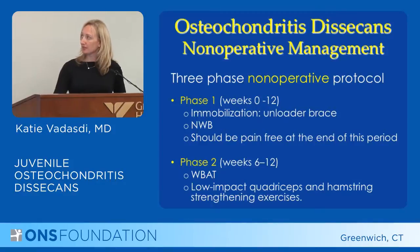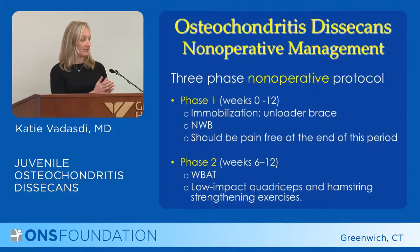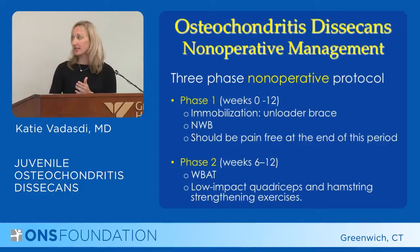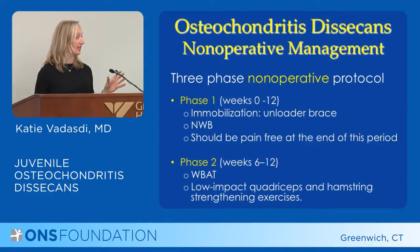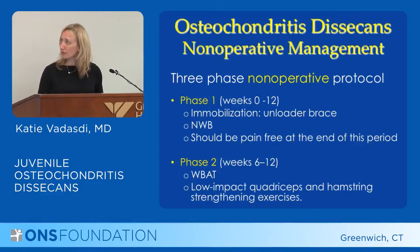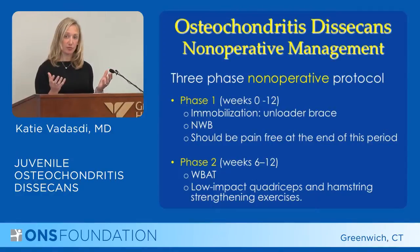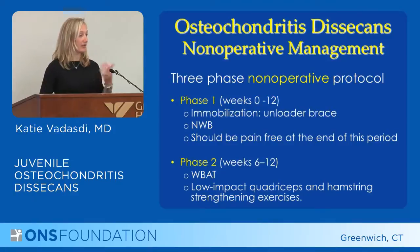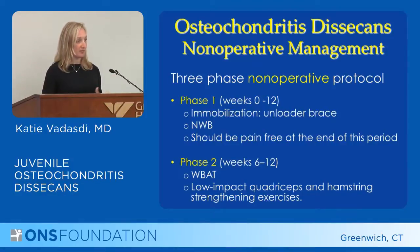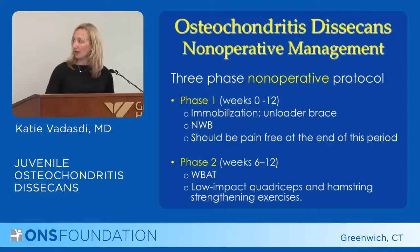Non-operative management is pretty specific but varies depending on the extent of the lesion, the age of the child, the size, and how well they're progressing. Not every kid is going to fall into an exact guideline. The first phase can last from zero to 12 weeks and involves immobilization, often with crutches for non-weight-bearing. You'll use an unloader brace that unloads the inside of the knee, taking stress off that subchondral bone and allowing it to heal, preventing further ischemia. Before moving on, the patient should be completely pain-free.